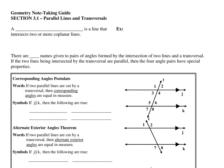Starting lesson 3.1, Parallel Lines and Transversals. A transversal is a line that intersects two or more coplanar lines. Coplanar means they lie in the same plane. What you're looking at on the screen is a plane, or the piece of paper is a plane. Here I have two lines, and I have this line that intersects both of them. This blue line is known as your transversal.